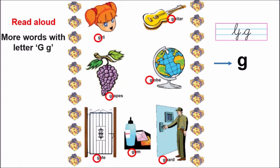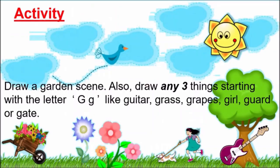Well done, children. Now, it is time for an activity. Children, draw a garden scene, and also draw any three things starting with the letter G — like guitar, or grass, or grapes, or girl, or guard, or gate. You have to draw any three things starting with the letter G in your garden scene. So, draw it and share your pictures with me. I will be waiting. Bye-bye. Thank you.